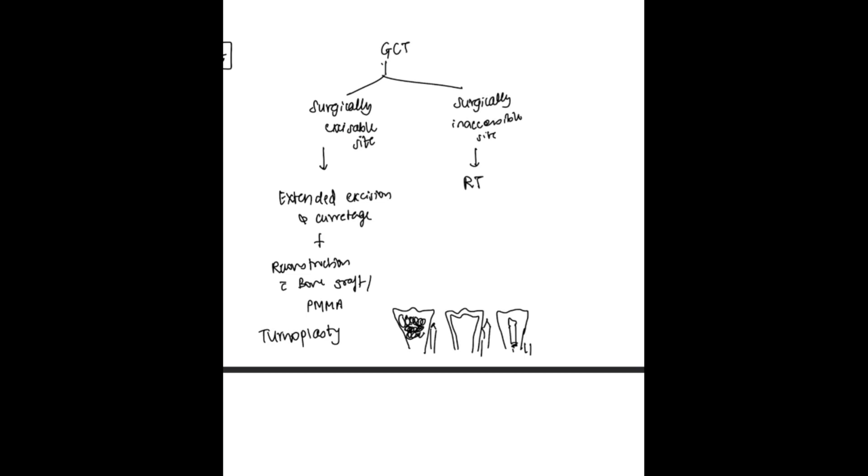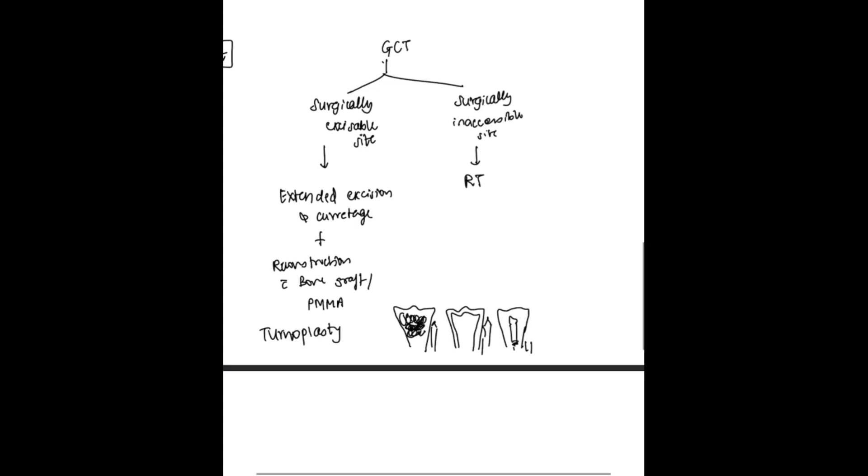I have drawn a schematic diagram. This is the upper end of tibia, that is proximal end of tibia. This is the giant cell tumor. Now we need to perform extended curettage and excision. After that, this area would be removed. Then turnoplasty is to be performed or bone grafting is to be done. From fibula, we need to put the bone graft here and then put some screws.